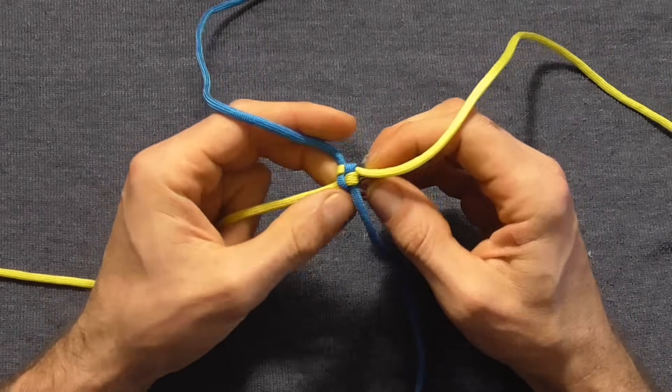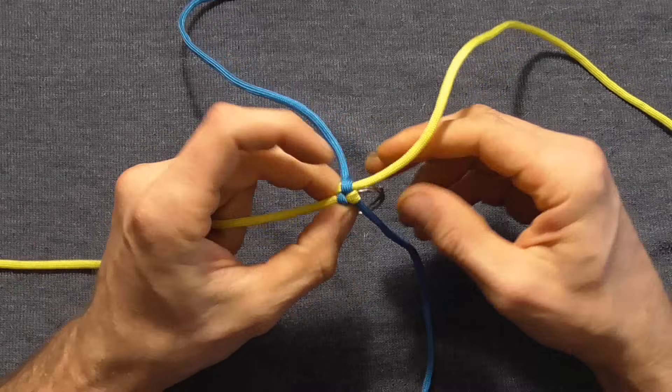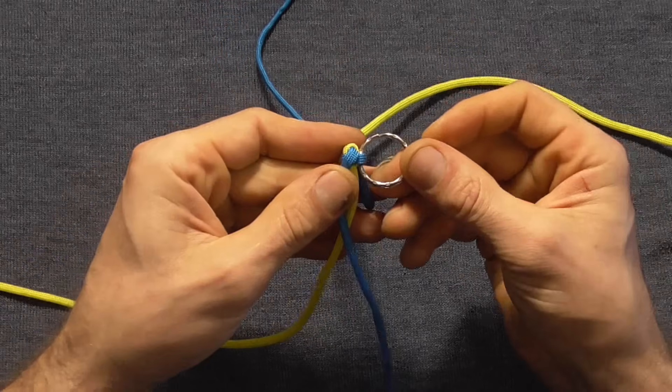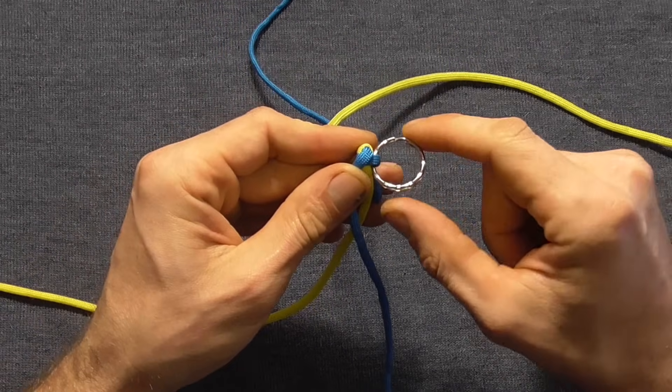And then just tighten it up by pulling on each of the strands, and you should end up with that, with the keyring threaded right down here at the bottom.